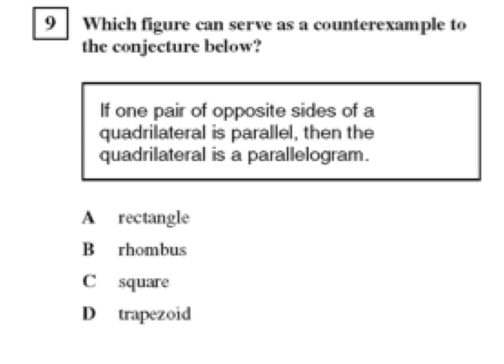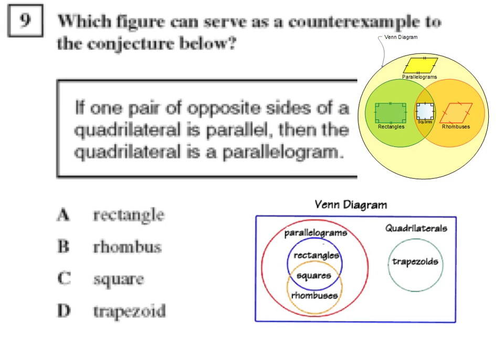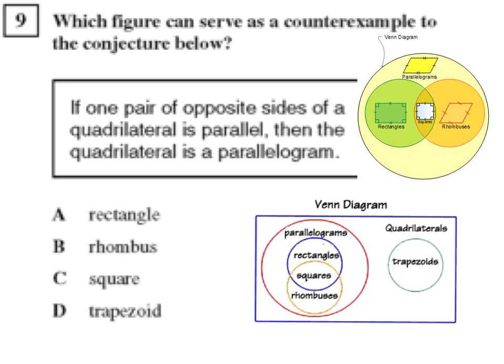So let's take a look at some diagrams here. I'll just move this off to the side a bit. And if you notice, in this Venn diagram here, we have this blue box represents all quadrilaterals.